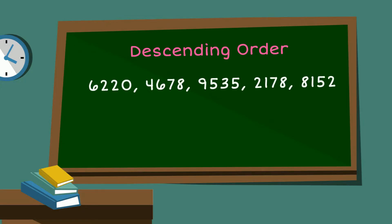Let's look at these numbers shown. So let's see if we can put them in descending order, meaning we have to start from our largest or biggest number which is 9,535. Next in line for our largest number would be 8,152, then 6,220, followed by 4,678 and lastly 2,178.